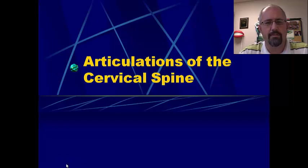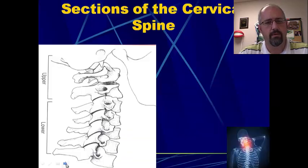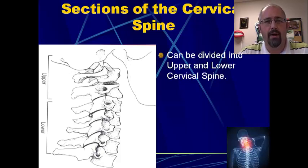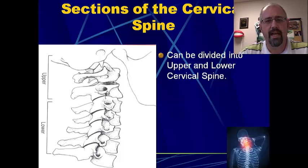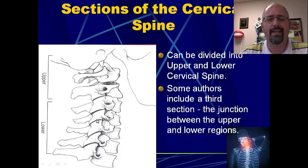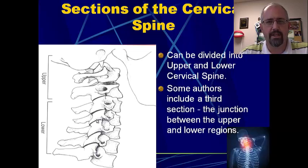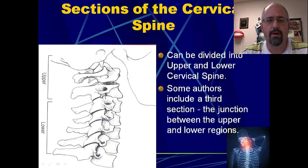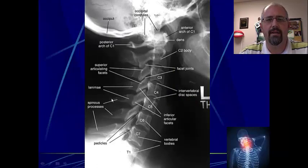There's the upper cervical spine and then there's the lower cervical spine. The upper cervical spine — C0, which is the occiput, C1 and C2 — those are considered together. Then the lower is C3 down through to C7. Some authors include a third section at the junction between the upper and lower, but let's just consider it in terms of upper and then lower.